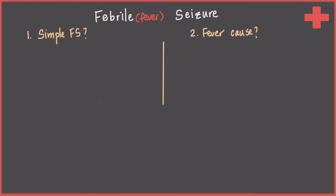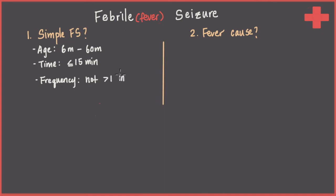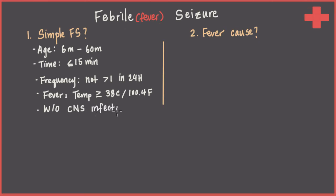So let's go back to question number one: what defines a simple febrile seizure? This is in kids who have no underlying seizure disorder. Number one is age — the age group we think of is six months to 60 months. The duration: febrile seizures should be 15 minutes or shorter to qualify as simple. The frequency: there shouldn't be more than one episode in 24 hours. Number four, they should have a fever, which is greater than 38 degrees Celsius. And lastly, without central nervous system infection. The most common infection we worry about is meningitis. You have to have all five of these conditions to qualify as a simple febrile seizure.